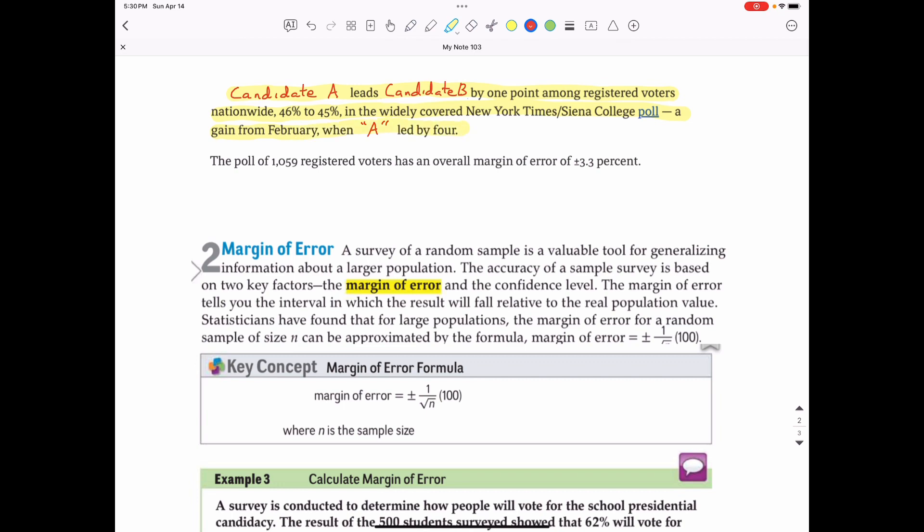Candidate A leads candidate B by one point among registered voters nationwide, 46% to 45%, in the widely covered New York Times-Siena poll, a gain from February when candidate A led by four. The poll of 1,059 registered voters has an overall margin of error of plus or minus 3.3%. So what does that mean when it has a margin of error?